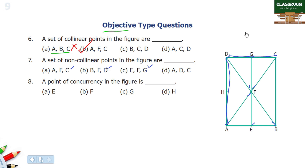Next one — point of concurrency in the figure. The point of concurrency is the point of intersection, and the answer is F.